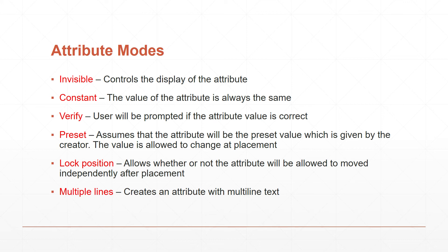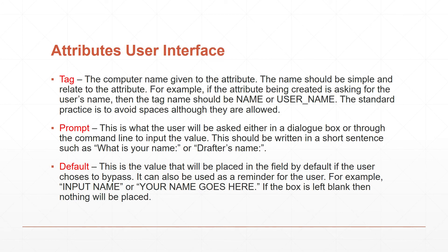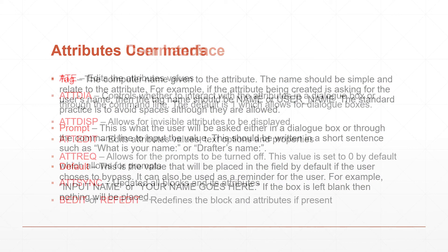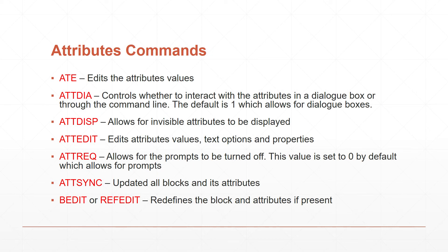Once you get to the user interface you're going to have a tag, a prompt, and a default. The tag is nothing more than basic computer language for how you want the attribute to look. The prompt is what you want the computer to ask you in a dialog box. The default is something you want to always put in automatically. You can also pick multiple modes at once. There are also some attribute commands you can use to change, modify, or edit these attributes.